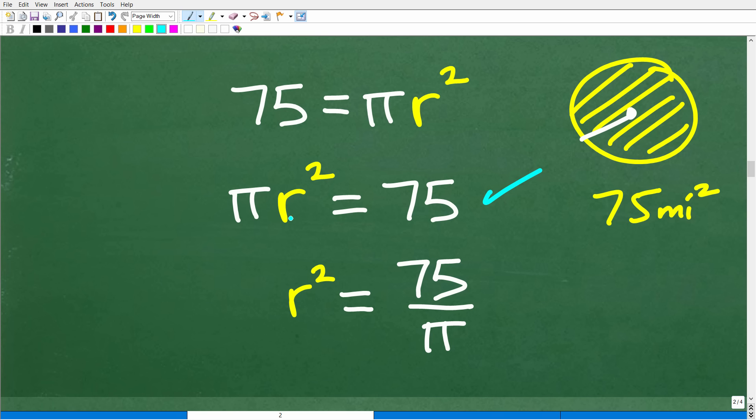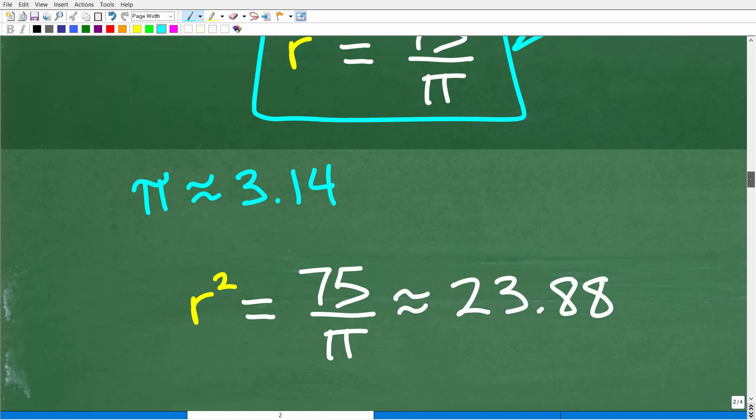Okay, so we have pi r squared is equal to 75. I'm going to solve this equation. So, first, we're going to isolate the r squared part, okay? And what we're going to do here is divide both sides of the equation by pi, okay? So, we got 75 divided by pi. r squared is equal to 75 divided by pi. So, now, we're going to go ahead and take the next step and deal with this.